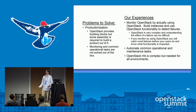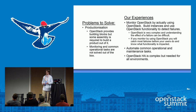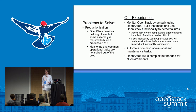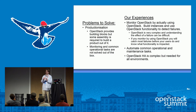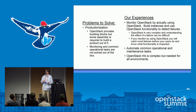OpenStack provides a lot of building blocks, but some assembly is required to build a product ready for production. Monitoring and common operational tasks are not solved out of the box. One of the biggest things we found successful is monitoring OpenStack by actually using OpenStack — provisioning instances, provisioning volumes, attaching them to instances, exercising the functionality. Because OpenStack is a complex system, trying to approach it from the bottom up is really hard. With top-down monitoring, when an instance fails to provision you know exactly what the impact to the customer is and have something you can troubleshoot more easily.